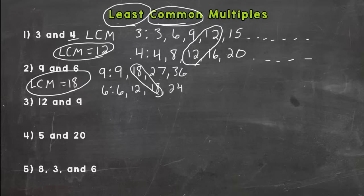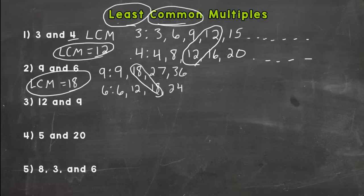If you write out your list for nine and six and you don't find any match, just continue your list until you do. If you don't see one after writing out five multiples for each, that's okay — it will happen. Just continue your list until you find a matching pair.